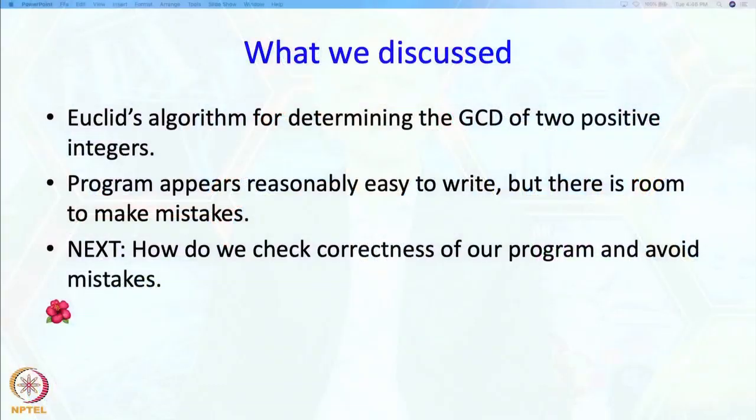In the previous segment, we discussed Euclid's algorithm for determining the GCD of two positive integers. We said that the program is simple but it is possible to make mistakes. Therefore it is a good idea to do some cross checks to ensure we did not make any mistakes. So that is what we are going to do in this segment — we are going to try and produce some kind of a correctness proof.